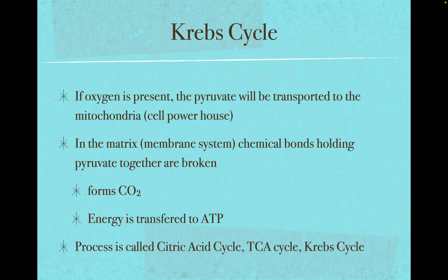It's considered an aerobic process. If oxygen is present, the pyruvate will be transported to the mitochondria, the cell powerhouse. In the membrane system, the chemical bonds holding the pyruvate together are broken, forming carbon dioxide and transferring that energy to high-energy electrons and ATP. This Krebs cycle is also called the citric acid cycle because the first intermediate created is citric acid. It's also called the tricarboxylic acid cycle because pyruvate has three carbons. And it's called the Krebs cycle after the lab that discovered most of these intermediates.